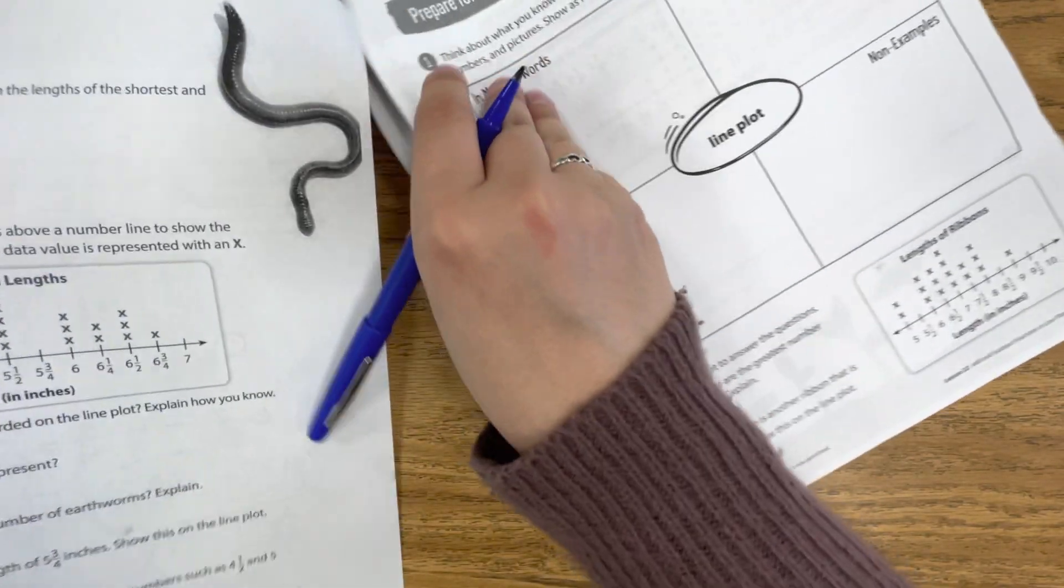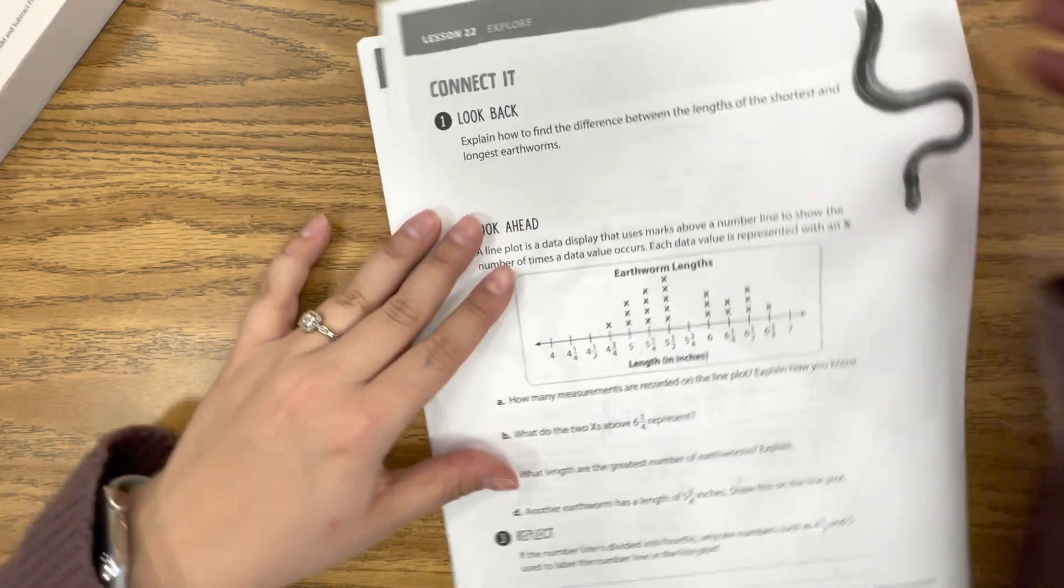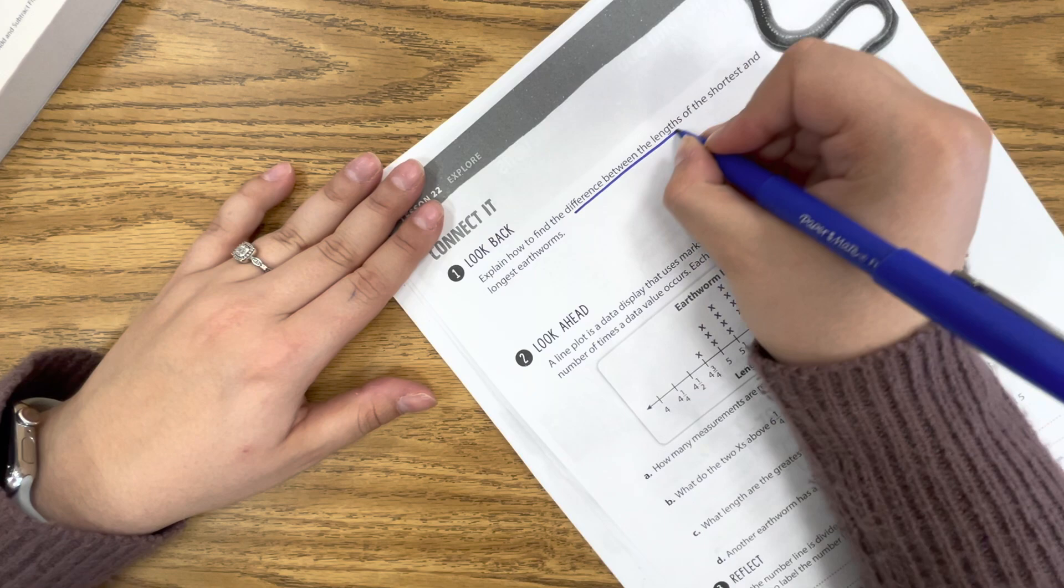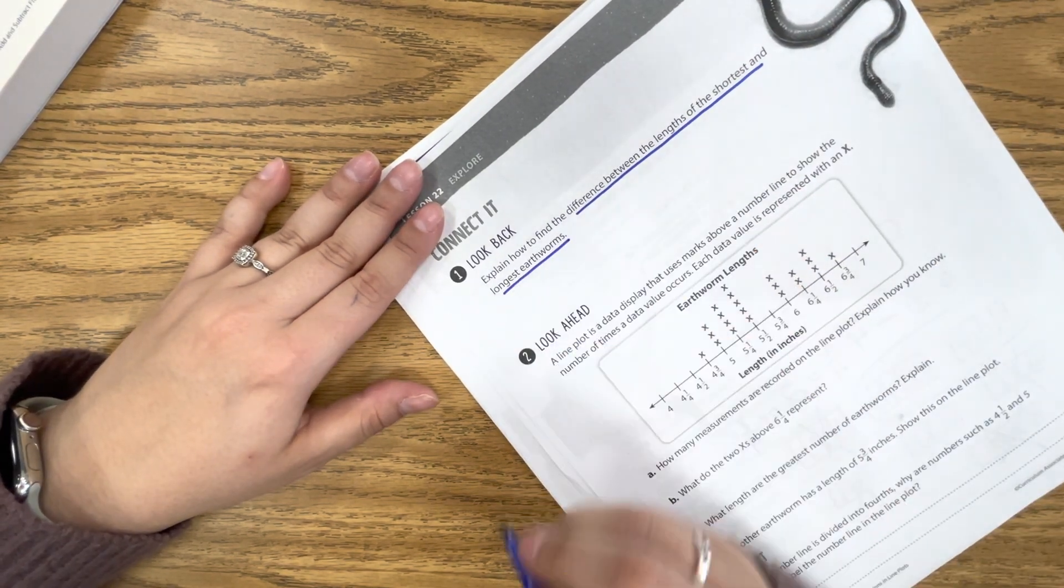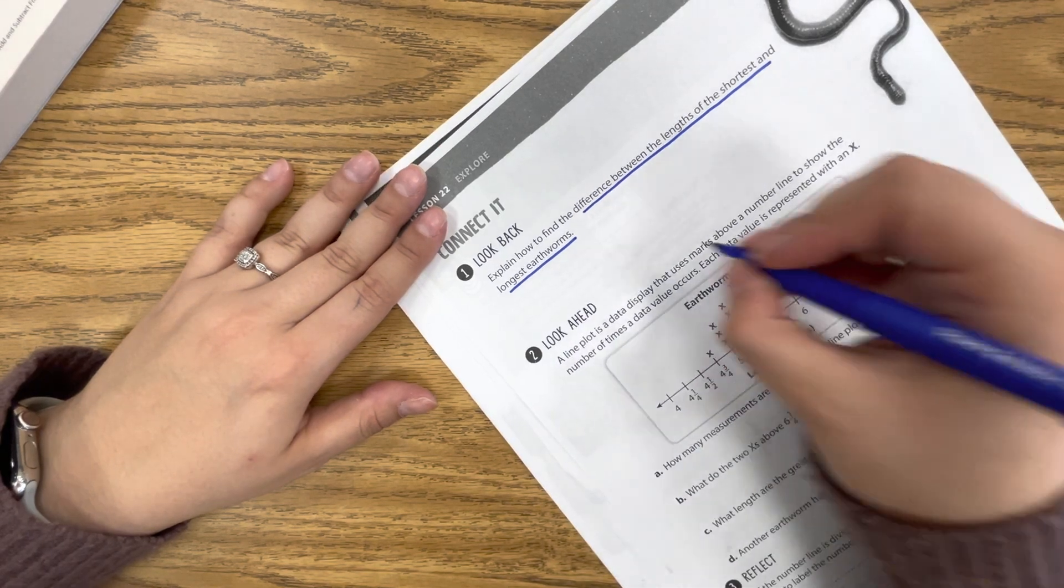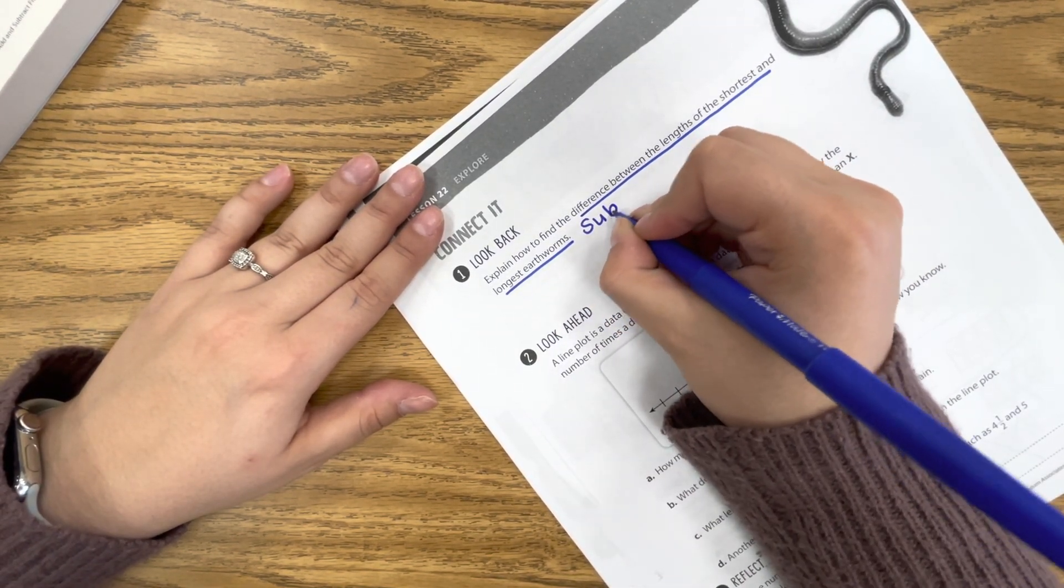So moving on along, we have page 464. We need to explain how to find the difference between the lengths of the shortest and longest earthworm. So we can do that by subtracting.